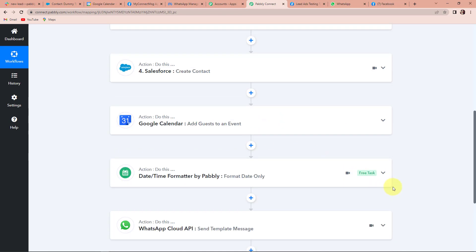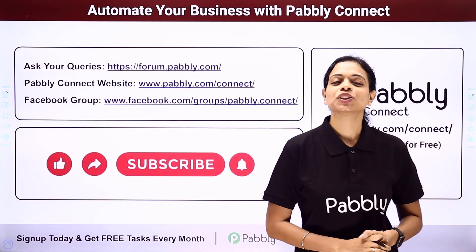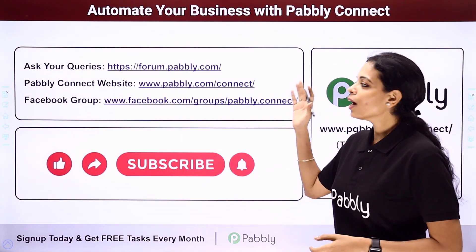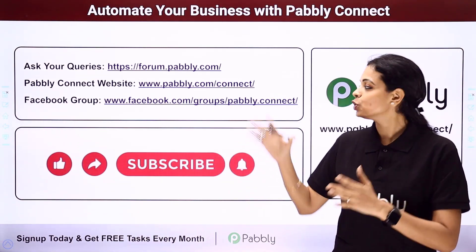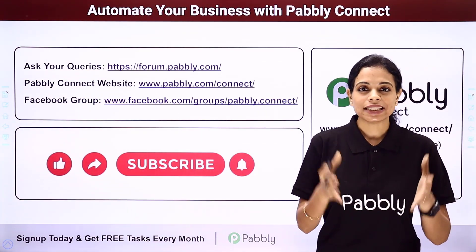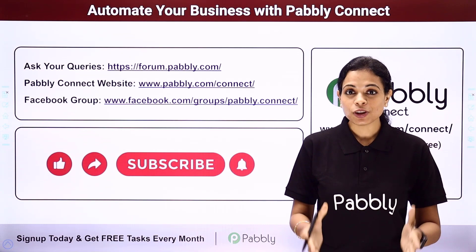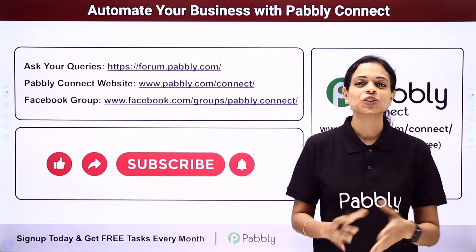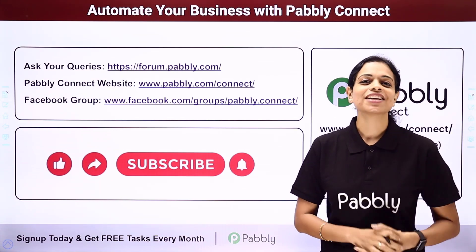I hope this is absolutely clear. If you have any doubt, you can refer to the workflow link in the description box — you can also clone it and start immediately. If you have any particular integration you wish to work on, you can always write to us. You can integrate multiple applications using Pabbly Connect. To ask any queries, write at forum.pabbly.com. You can also visit www.pabbly.com/connect. For the latest updates on integrations and applications, visit our Facebook group. If you found this video helpful, share it with your friends and colleagues. I'll see you very soon with different integrations and automations. Do not forget to like, share and subscribe. Take care of yourself.